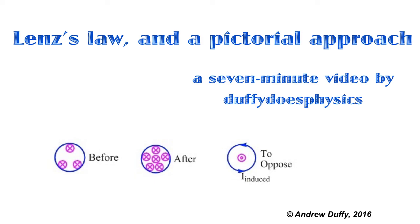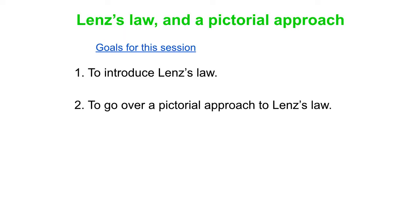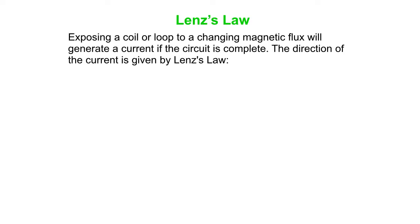This session is titled Lenz's Law and a Pictorial Approach. Our goals here are first to introduce Lenz's Law, and then go over a pictorial approach to Lenz's Law. What we know is that exposing a coil or a loop to a change in magnetic flux will generate a current if the circuit is complete.